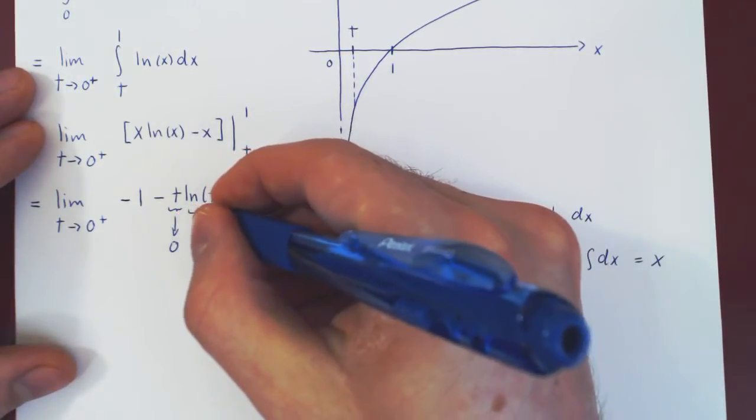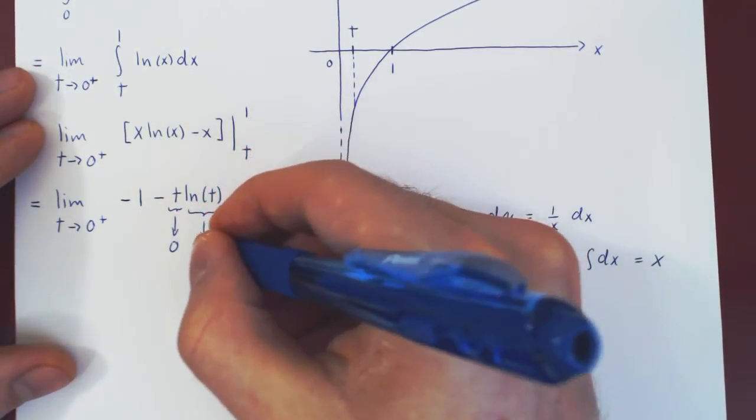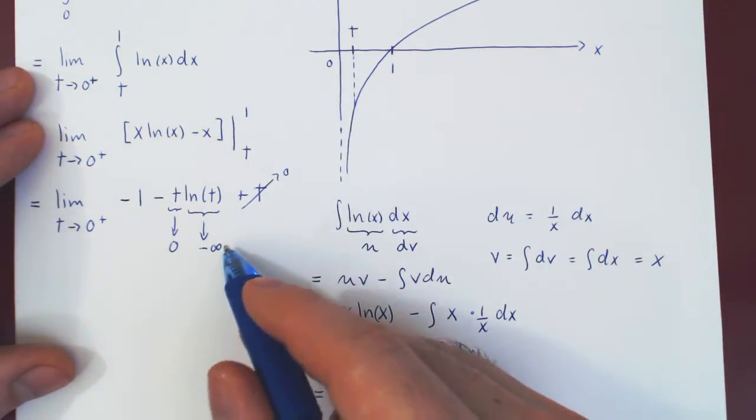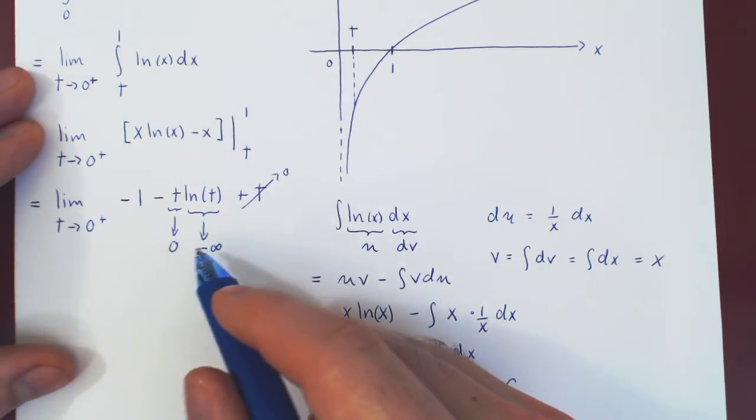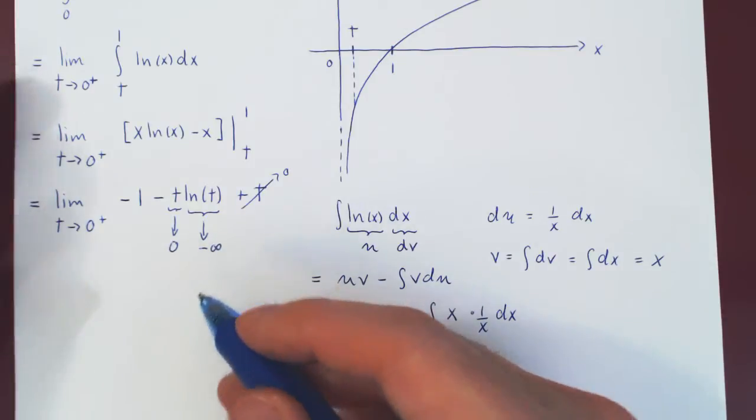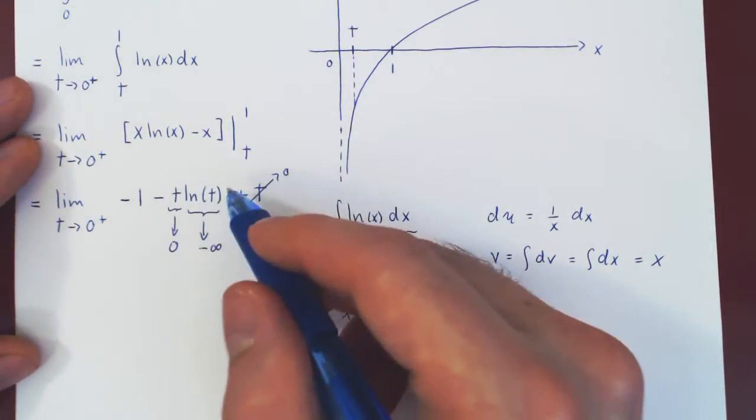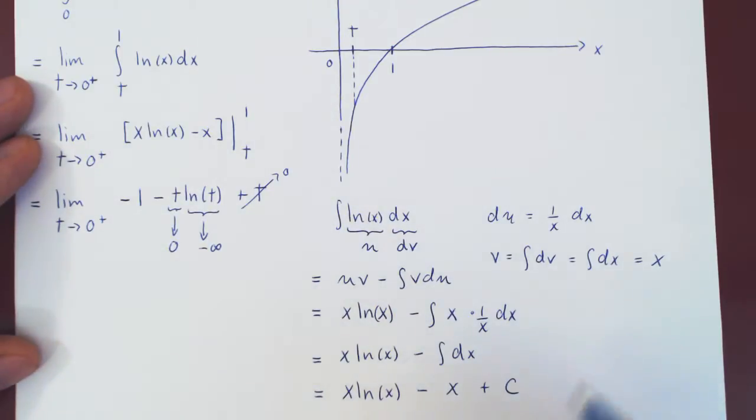So what we have here in this part is a non-trivial limit. We have a 0 times a negative infinity. Something small times something big, anything can happen. What we must do now is to find a clever way of turning this into a L'Hopital's Rule problem.